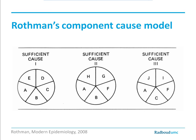Another model very important for epidemiologists is Rothman's component cause model. Rothman basically says that in medicine we tend not to have just one necessary and sufficient cause — human biology is complex, and a sufficient cause is often made up of several components. Here we have three sufficient causes for a certain disease, with components A, B, C, D, and E. Looking at these three component causes, A appears in all three, so A appears to be a necessary cause, but it's not sufficient — it needs other component causes to form a sufficient cause.